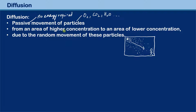So that is the definition — all three parts are important: it's a passive movement of particles from an area of higher concentration to an area of lower concentration, due to the random movement of these particles. Moving from an area of higher concentration to an area of lower concentration can also be summarized as moving down a concentration gradient. So it moves down a concentration gradient when it moves from an area of high concentration to an area of low concentration.